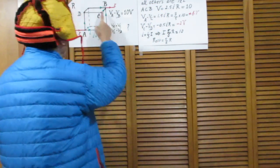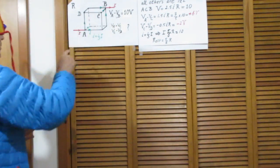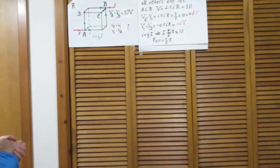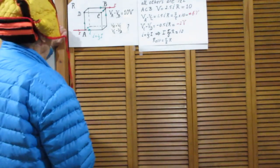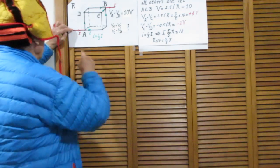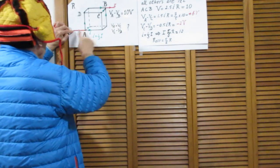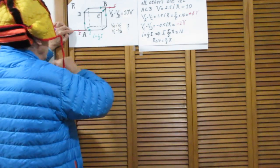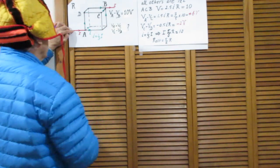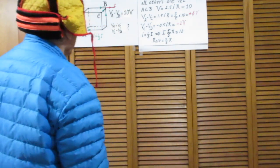Here is a cube. 12 sides and each side has a resistor R. We apply a potential difference between A and B, so a current is flowing in here and the same current is flowing out here, and that potential difference is 10 volts.